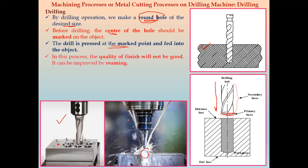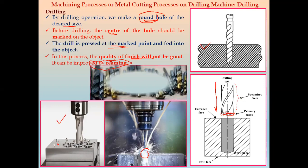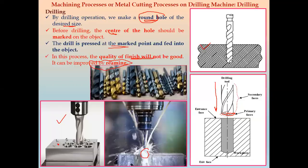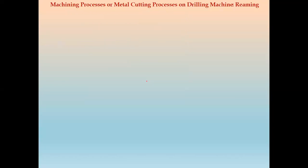In the drilling process, the quality of finish will not be good. The quality of the drilled hole is improved by another operation called the reaming operation. There are different types of drill tools available for different diameters, sizes, and lengths.